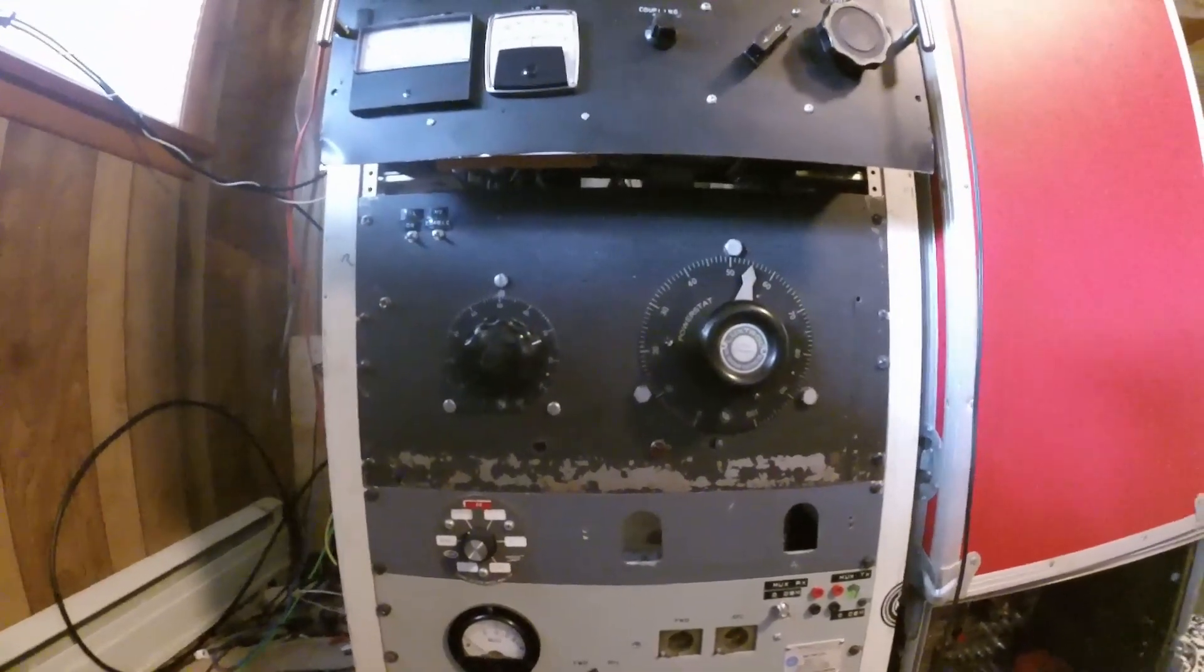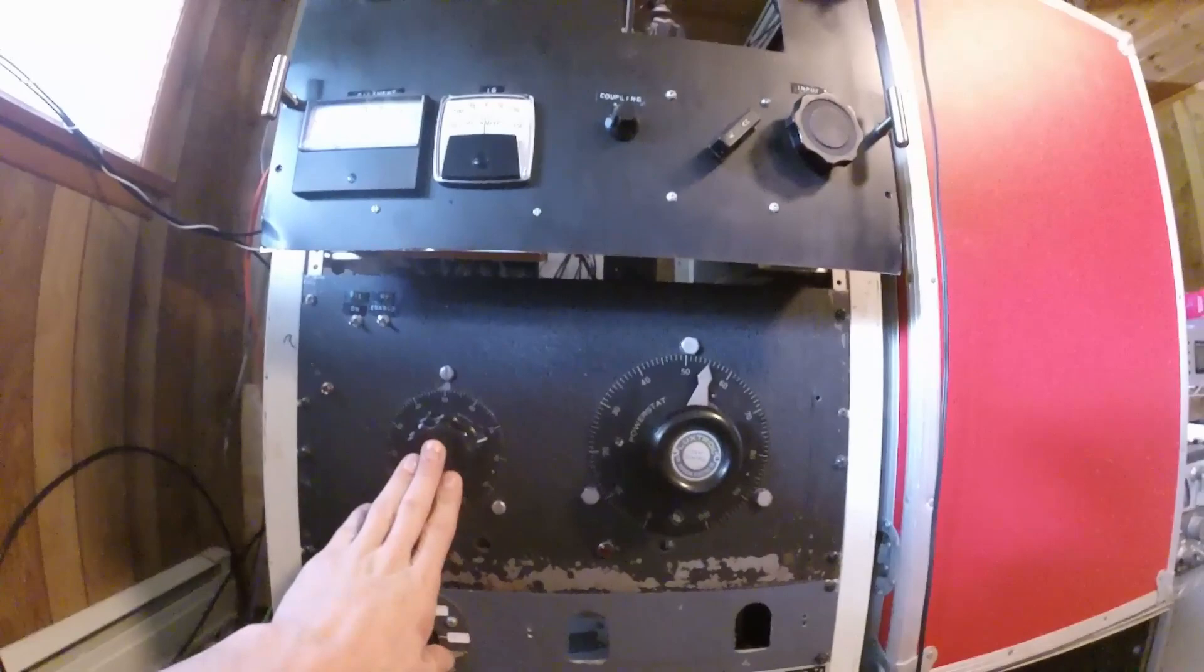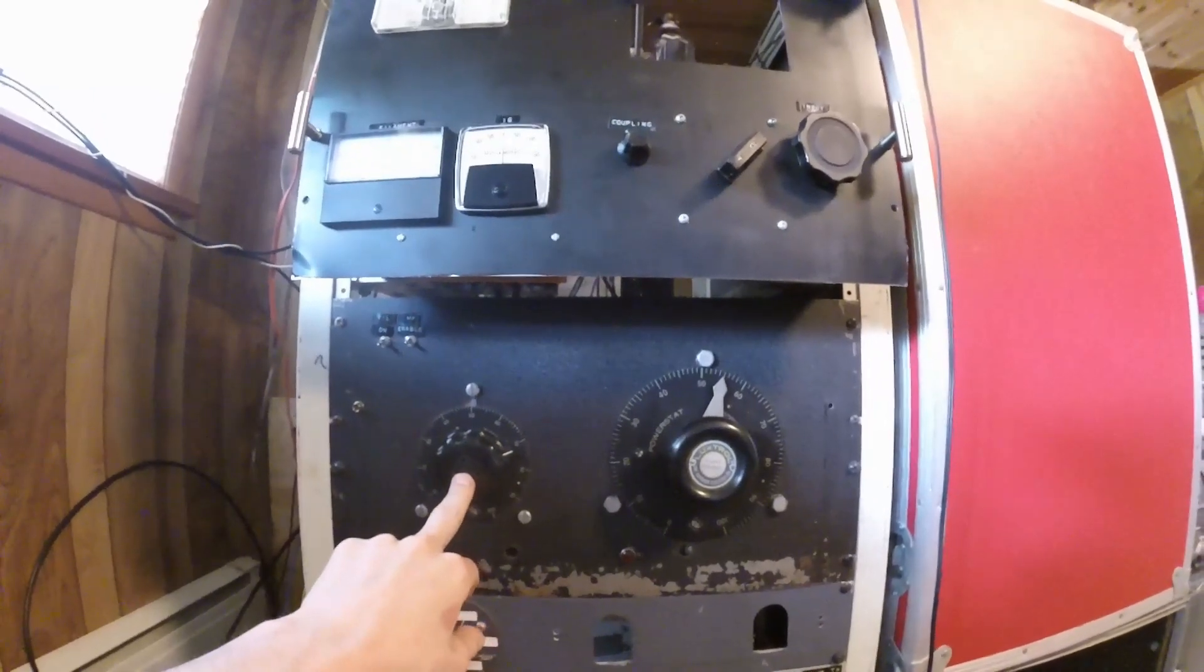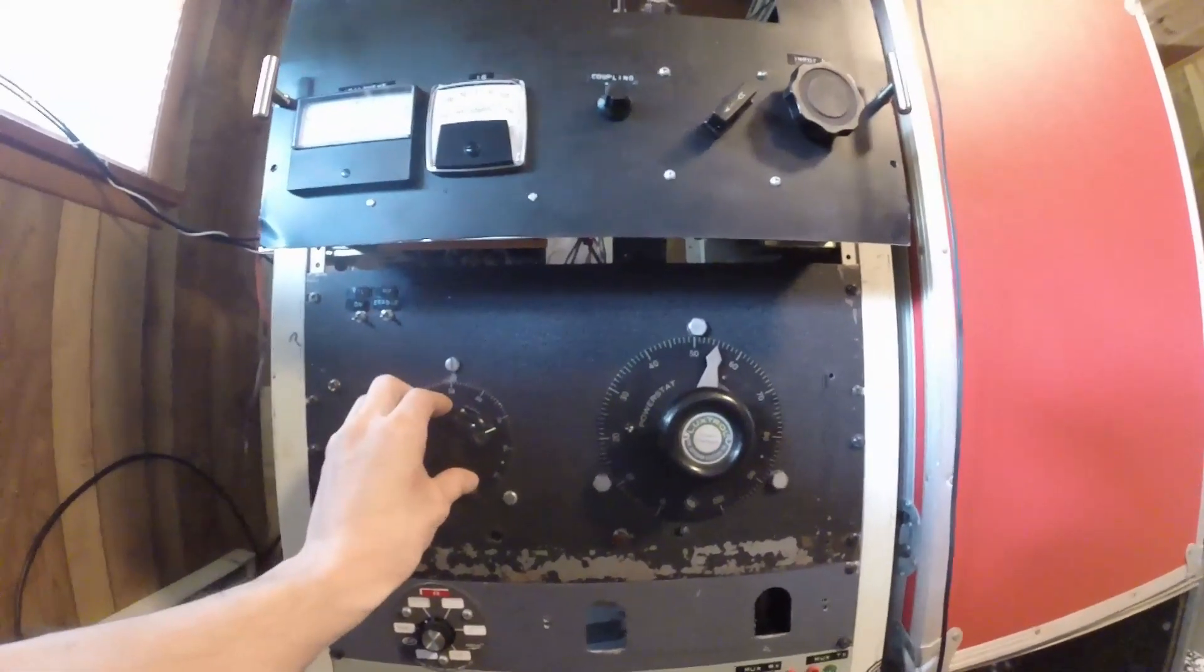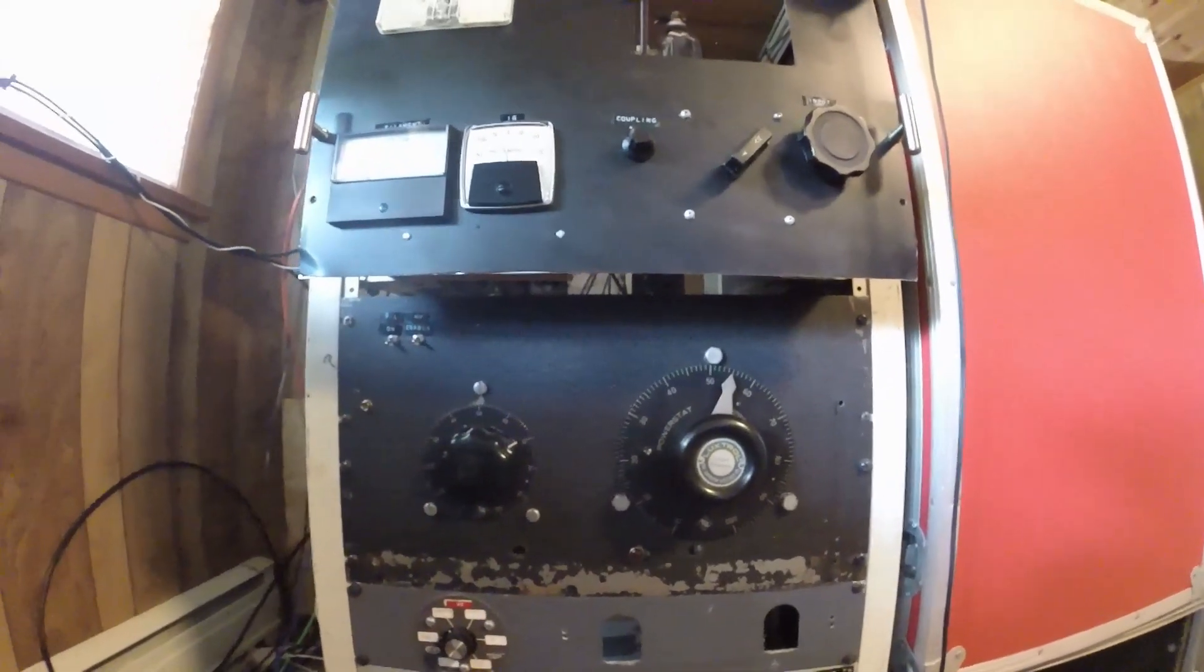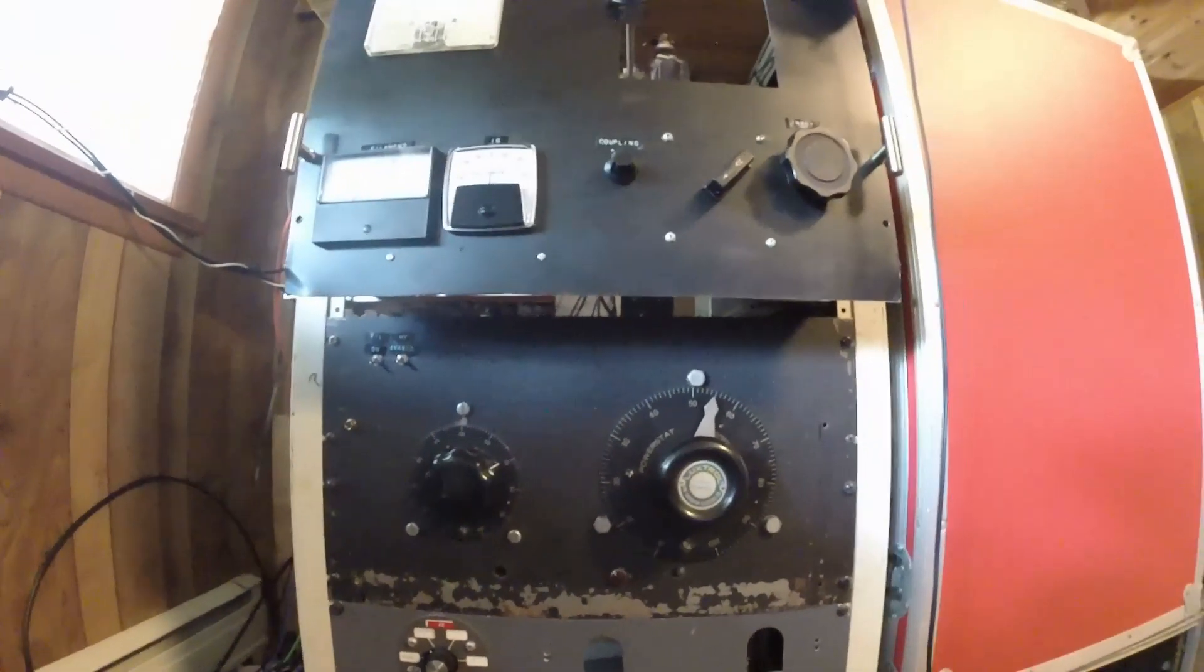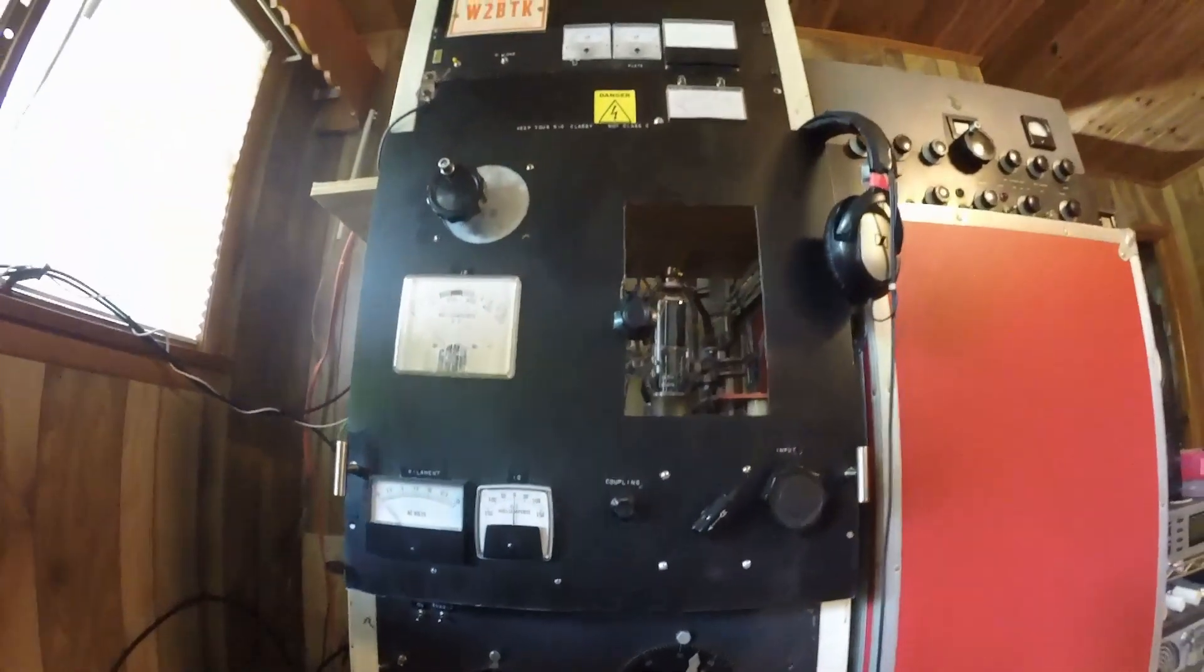When I want to use my Kenwood exciter, I'll flip this over to the 440 position, meaning Kenwood TS-440. Right now it's connected to the Johnson Viking 2, which is what I mainly use. Above that we have a couple of variacs. This one controls the Johnson Viking 2. This variac is in series with one of the legs of the plate supply on the primary side.